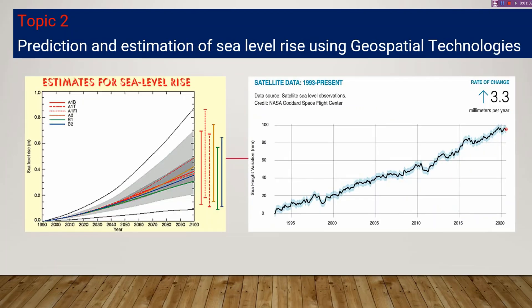The next topic is prediction and estimation of sea level rise using GIS and geospatial technologies. We all know about the greenhouse effect and the consequences of global warming due to the emission of toxic gases. The global temperature is getting higher day by day. One of the main consequences of global warming is sea level rise due to the melting of the ice caps. You can work to predict and estimate sea level rise using GIS and remote sensing — this is really dynamic and very urgent.